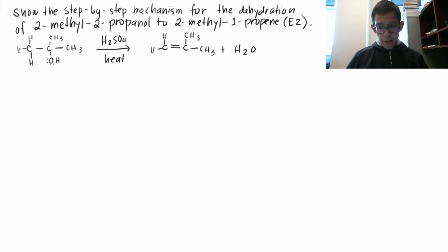Show the step-by-step mechanism for the dehydration of 2-methyl-2-propanol to 2-methyl-1-propene. And the reaction goes via the E2 mechanism because our alcohol is a tertiary alcohol.